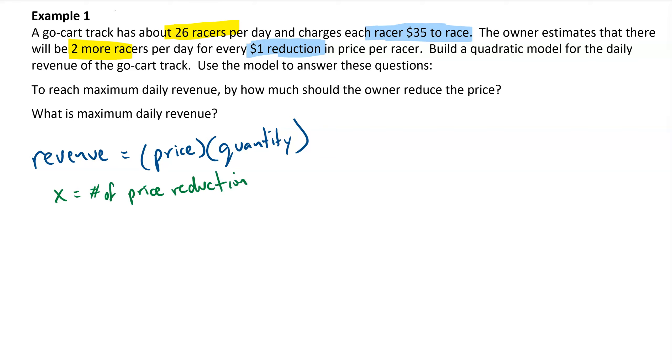Based on that, I can build a formula for the price: 35 minus x, because each price reduction is going to lower the price by $1. And for the quantity, I'm going to take 26 plus 2x, because each time I reduce the price by $1, the number of racers is going to go up by 2. So this gives me a quadratic function to work with. I have price times quantity.